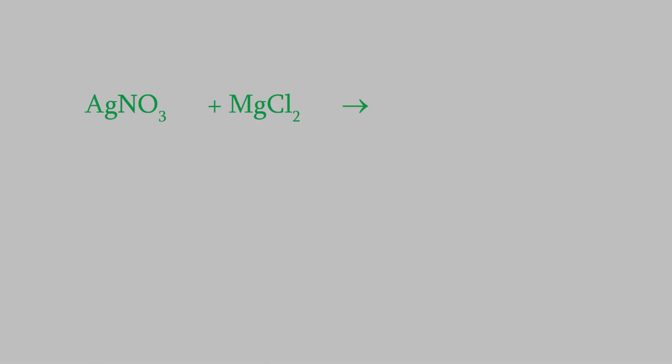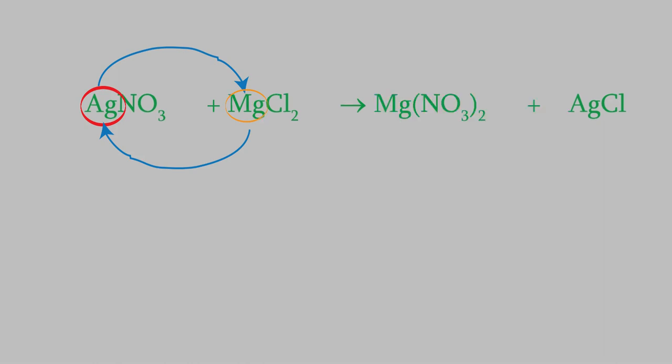Now let's figure out what the products are. This will be a double displacement, so to find the products we just need to switch the two cations. The silver-1 ion will pair up with the chlorine. Since silver has a charge of plus one and chlorine has a charge of minus one, there will just be one of each, so the formula is AgCl. The other cation is magnesium, and it will pair up with the nitrate. Magnesium has a charge of plus two and nitrate is minus one, so we'll need two nitrates to cancel out the charge on the magnesium.